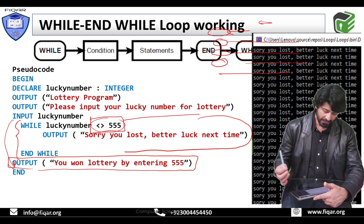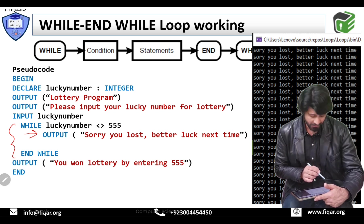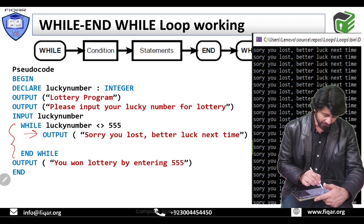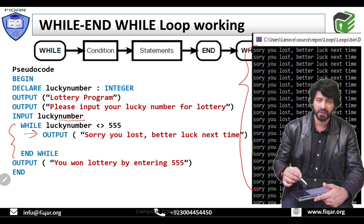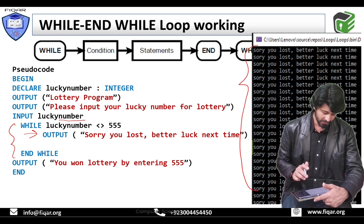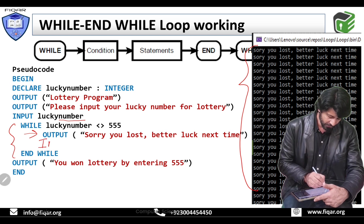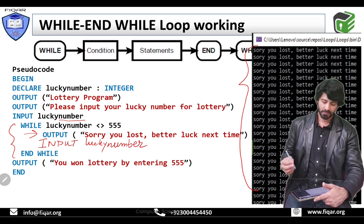If by mistake you have not taken another input inside the loop — you have only written output sorry you lost — and not asked the user to input again, then because the user has input something not equal to 555, the program will keep displaying sorry you lost an unlimited number of times. So there must be an input statement inside the loop to avoid such an error — input lucky number must be there.